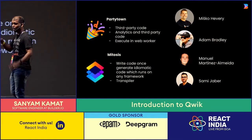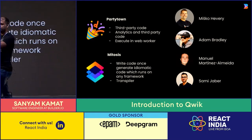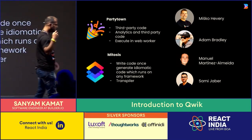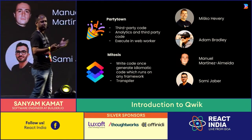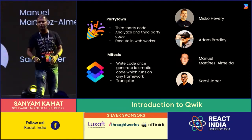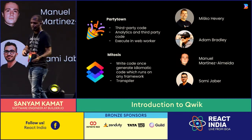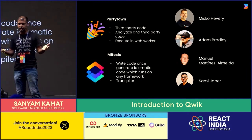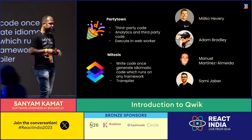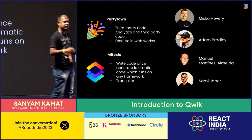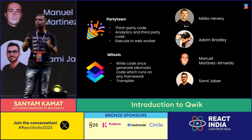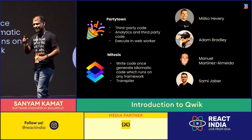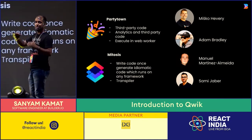So we introduced Partytown, which made sure all of these third-party tools can be pushed to a web worker, so your main JavaScript thread is free to do the actual load of the application. Then customers came and said they were doing things in Vue or React or something else, and wanted to port to a different language. We introduced Mitosis, which helps customers write code in whatever framework they started with and then move it to any framework or library they want. When all this was done, they realized that even using Partytown and Mitosis to transpile to different frameworks, the performance bar was still not crossing 90.